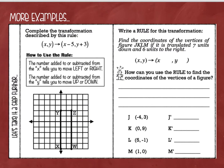Let's move on to our next example: complete the transformation described by this rule. We have to interpret what this rule means. The number added to or subtracted from the X tells you to move left or right — so X minus five means we are going five units to the left. The number added or subtracted from the Y tells you to move up or down — since we are adding three to Y, that means we are going up three. So this rule means left five and up three.